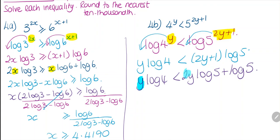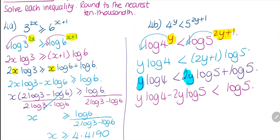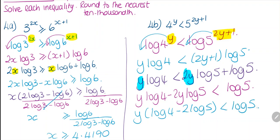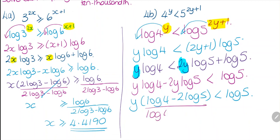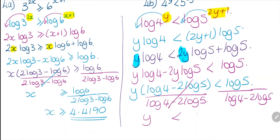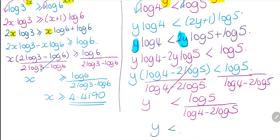We move the y-terms to one side, subtracting 2y log 5: y log 4 minus 2y log 5 is less than log 5. Factor by y: y(log 4 minus 2 log 5) is less than log 5. Divide both sides by (log 4 minus 2 log 5), so y is less than log 5 divided by (log 4 minus 2 log 5). Putting that in the calculator, y is less than minus 0.8782.